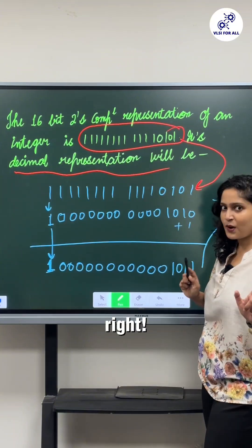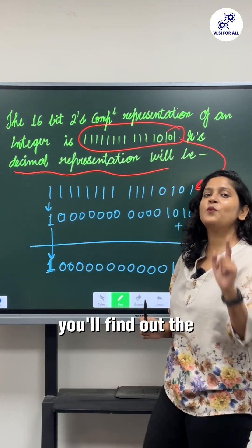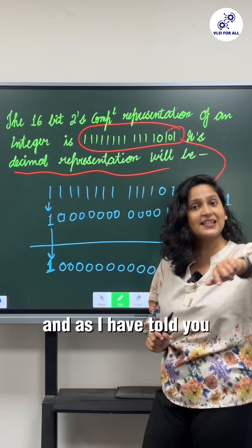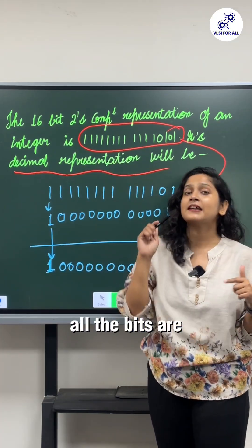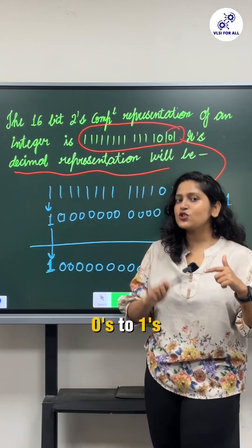Now what you have to do: you will find out the one's complement. As I have told you, for one's complement all the bits are getting reversed, right? Zeros to ones and ones to zeros.